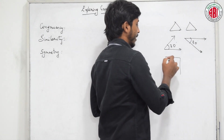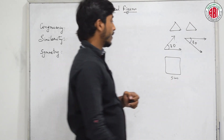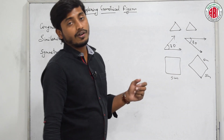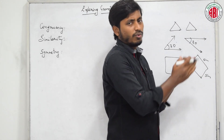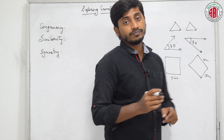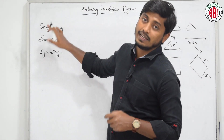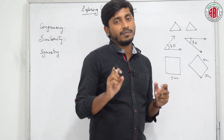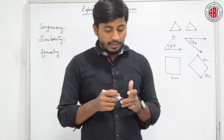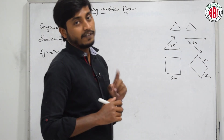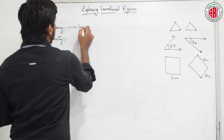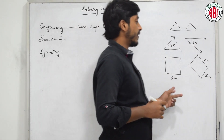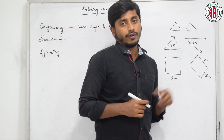Next, if this is a square of side 5 centimeters and there is one more square of side 5 centimeters, obviously they are congruent. Because they have the same shape, with only a slight variation in presentation. Congruency means both figures should have the same shape with the same dimension. Now, how do we identify whether two figures are congruent or not? They should have the same shape and they should also have the same size. Here 5 centimeters, here also 5 centimeters. If it is more than 5, they are not congruent.